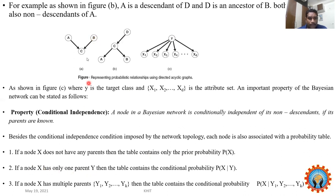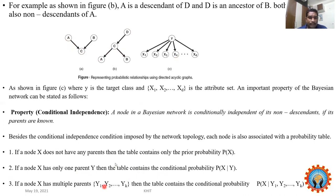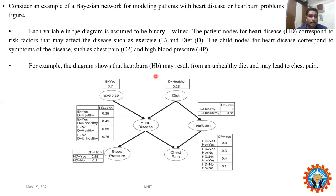For example, if node C has only one parent A, then we use the conditional probability P(C|A). If a node has multiple parents — say parents C1 and D1 — then the table contains P(X|C1, D1). This is how you construct the conditional probability table for each node in the Bayesian Belief Network.